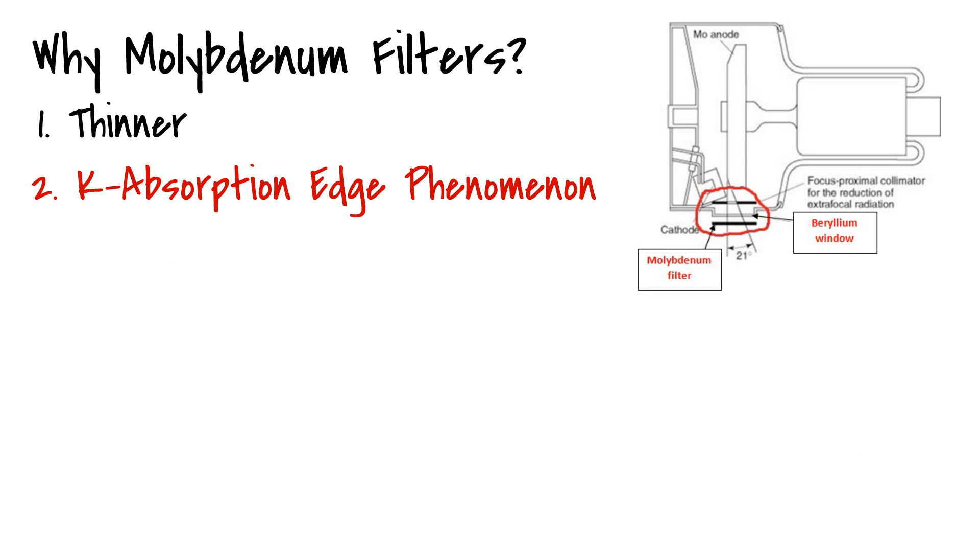This is known as the K-absorption edge phenomenon. Simply put, it means that molybdenum filters are able to selectively allow photons to pass through if they have energy that is only slightly below the binding energy of molybdenum.